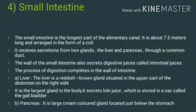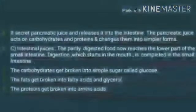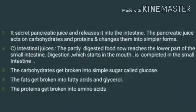The other part of the alimentary canal is the small intestine, which is the longest part — about 7.5 meters long and arranged in a coil-like structure. It receives secretions from two glands, the liver and the pancreas, through a common duct. The liver is reddish-brown in color, situated just below the stomach, and is the largest gland in the body. The pancreas secretes pancreatic juices that digest food and convert carbohydrates and proteins into simpler forms. The walls of the small intestine also secrete intestinal juices.